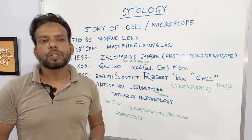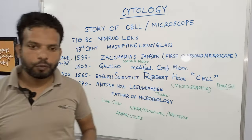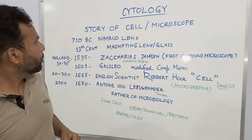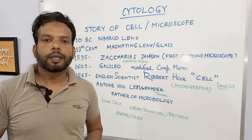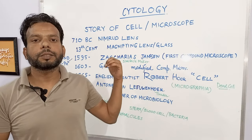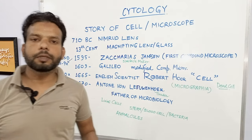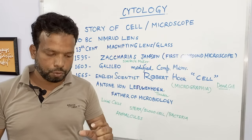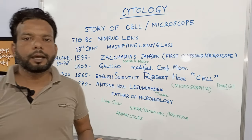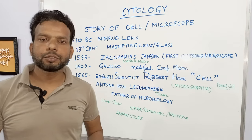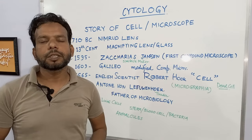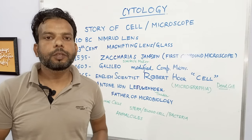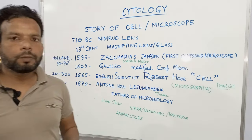If you go back in time to around 700 BC, it is written that there is a numeric lens which was discovered. It is named after the place called Nimrud, which is based in Iraq. Those people used to magnify things with the help of glass or stones. This is how people started magnifying things to observe and see better.